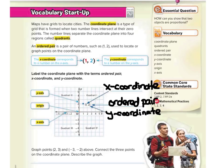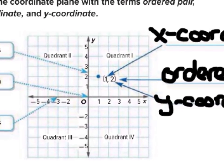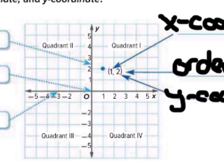Next, it states: graph the points (2, 3) and (-3, -2). Let's start there. If we zoom in on our graph so we can see a little bit better — if we're looking for (2, 3), that's 2 on our x and 3 on our y, and we're going to go to where they meet, right there. So we're going to draw a point at (2, 3).